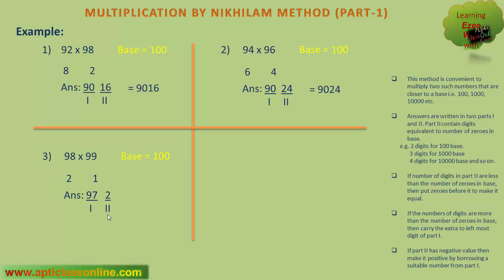But here in this example, the second part contains only one digit, but it has to contain two digits. If number of digits in part 2 is less, then we have to put zeros before it to make it equal to the number of zeros in base. Since it contains one digit, therefore we have to put zero before 2, to make it equal to two digits, so it becomes 9702. That is the answer.